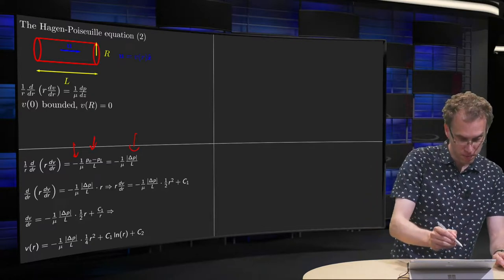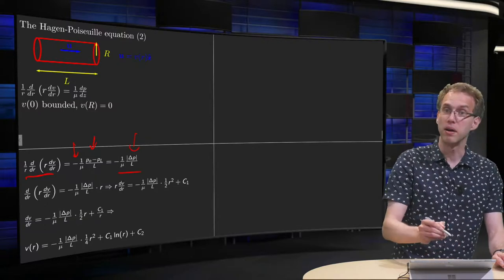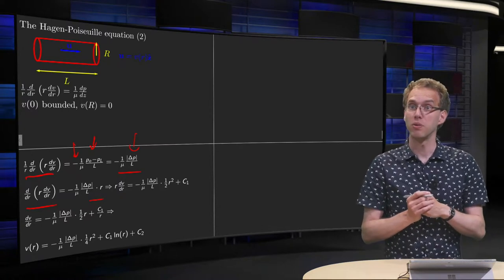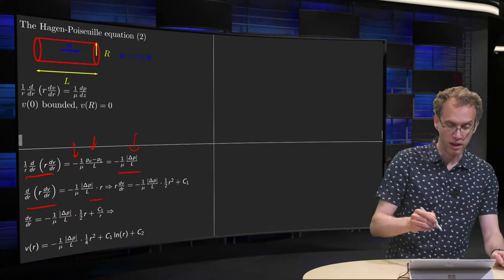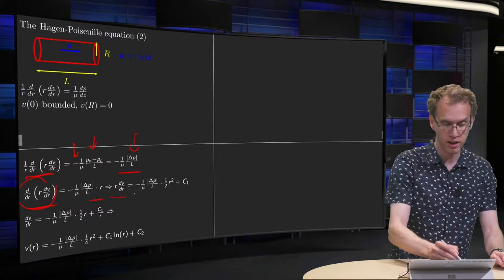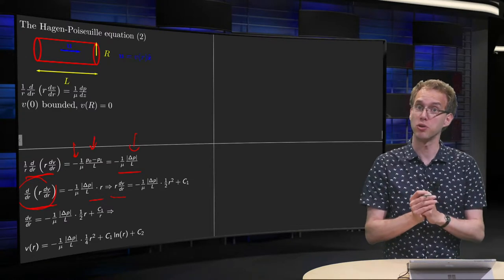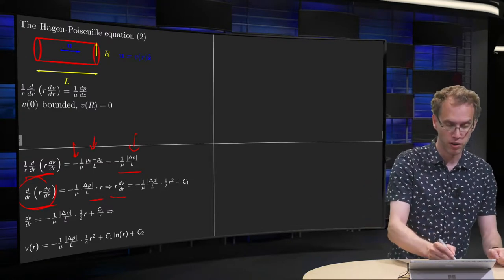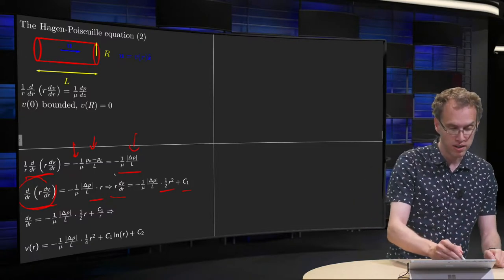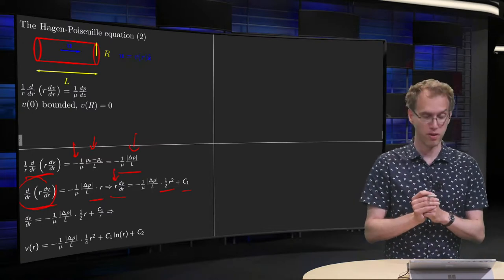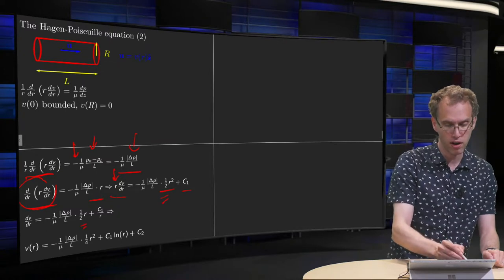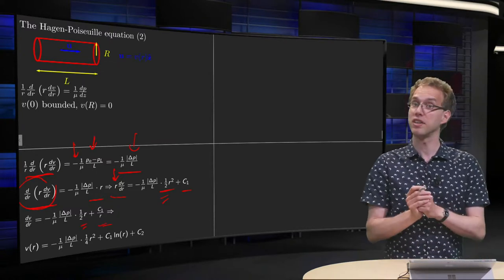Now, we multiply left and right by R, then we can integrate once with respect to R. On the left-hand side, this term becomes R times the dV/dr, and on the right-hand side we get this, which is just a constant, times one-half R squared plus some integration constant. Then divide again by R to get rid of this factor of R.